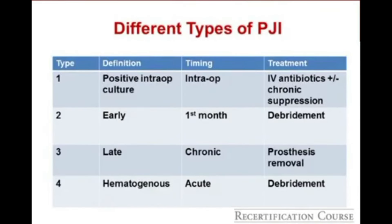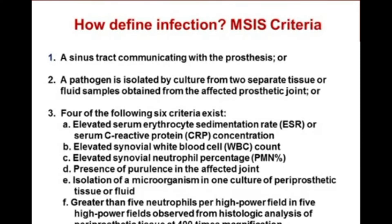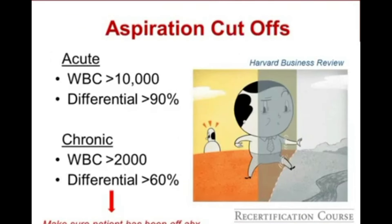You should be familiar with the MSIS criteria for periprosthetic infection. For aspiration, in acute postoperative infection, look for WBC greater than 10,000 with differential above 90%. In chronic infection, the WBC cutoff is around 2,000 cells with a differential of 60%. The test writers are unlikely to ask you to differentiate subtle deviations from these cutoffs. For acute postoperative infection, avoid starting antibiotics prematurely — draw labs and take the patient back for irrigation and debridement if the wound is draining.